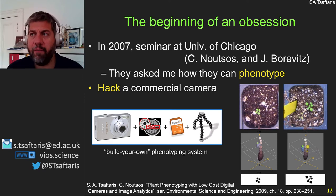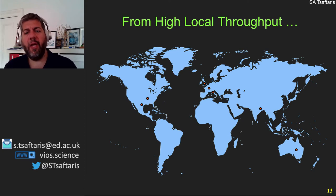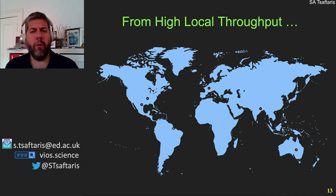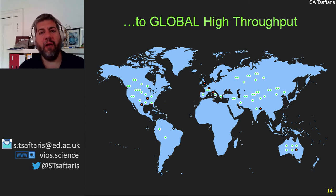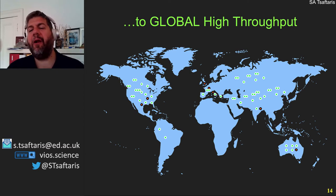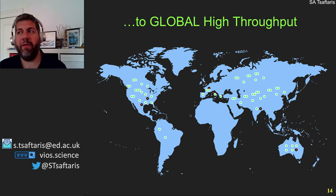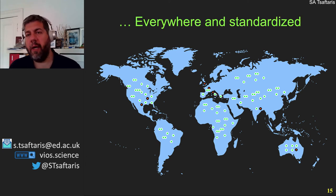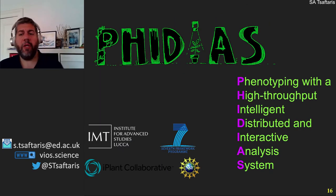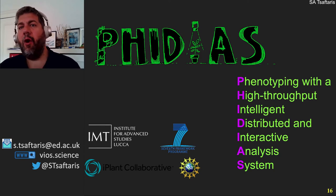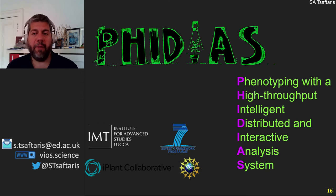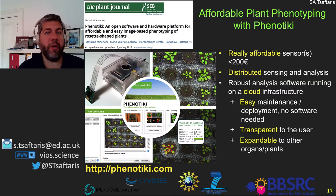That first paper started informing our idea: if there are local high-throughput centers distributed around the world, then collectively we can achieve a global high throughput. If we can have affordable devices scattered around the world, we might increase the overall throughput as a community. We wanted to do this in a standardized manner — standardizing both the imaging and the analysis. So in the early 2010s, we came up with this project to create a phenotyping infrastructure, which we now call Phenotyky.